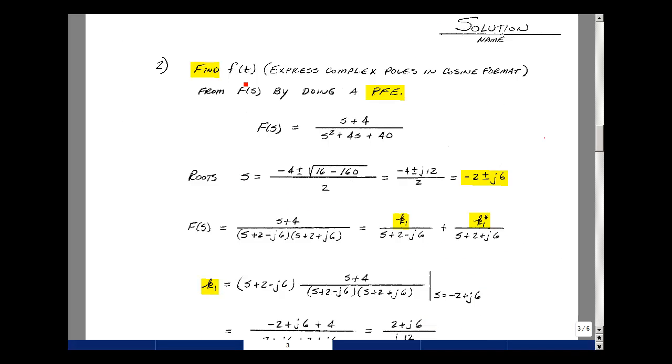In problem number 2, we're asked to find F(t) from F(s) by doing a partial fraction expansion. For complex poles, we'll use the cosine format. Given this F(s), let's find the roots of the denominator using the quadratic formula, minus 4, plus or minus 4 squared, minus 4 times 40 times 1, and that's minus 160. Pull out the minus sign as a j. I'm left with 160 minus 16, which is 144, and the square root of that is 12. We have minus 4 plus or minus j12 divided by 2, and that's equal to minus 2 plus or minus j6.